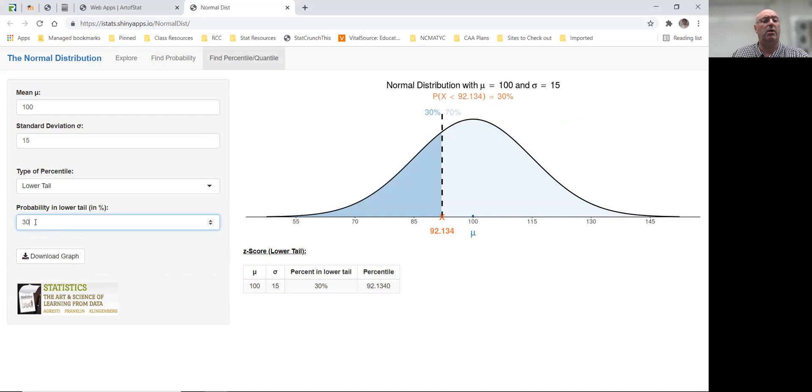Or if I needed to find the 75th percentile, the upper quartile if you will, I get a score of about 110.